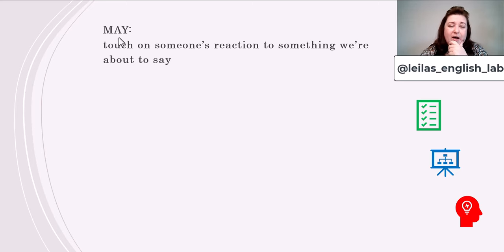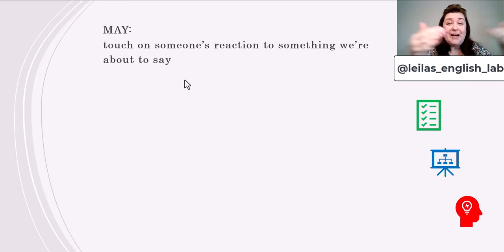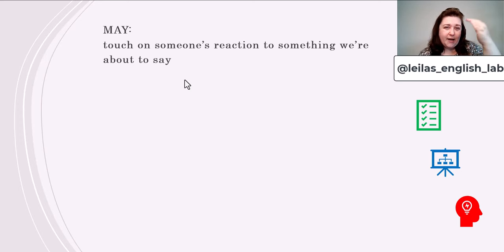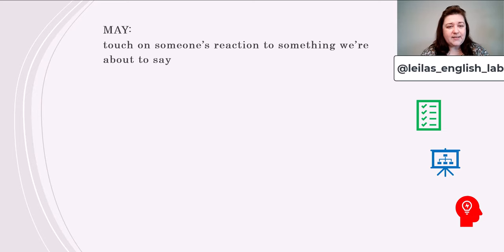Let's go to the next slide. With the modal verb may, we're touching on someone's reaction to something we're about to say — I haven't said it yet, but I'm already thinking about how that person will react because I know them. It could be family, friends, relatives, or work colleagues. I know what kind of reaction I'm going to get, so I try to address that while I'm speaking.